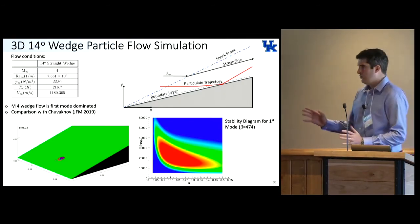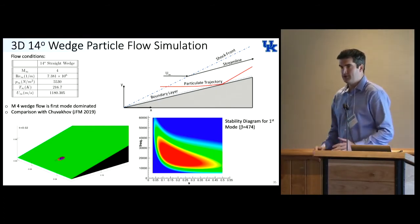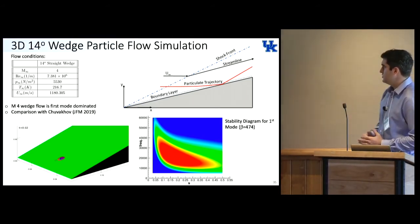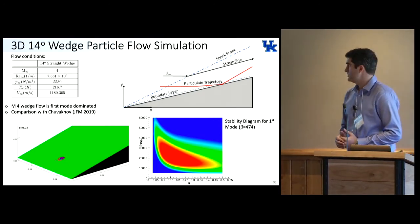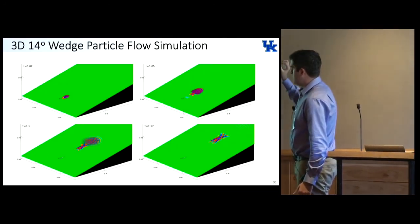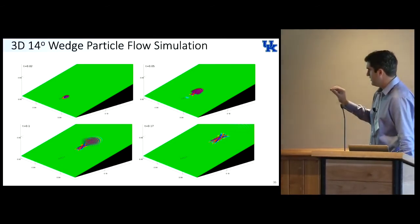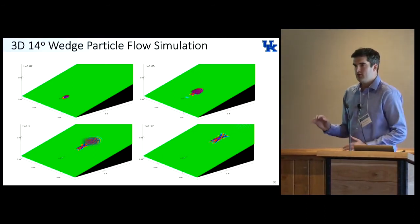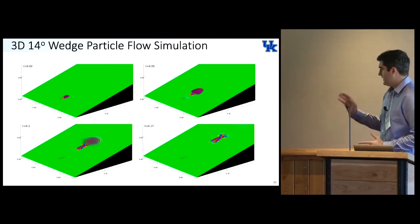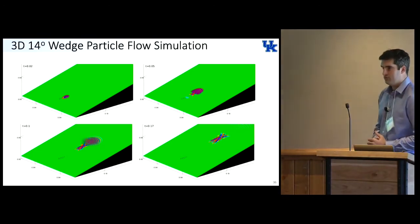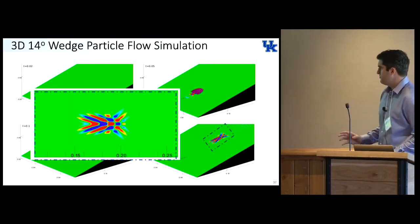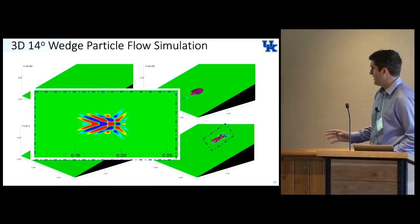Then we move on to a wedge case, more indicative of a front of a hypersonic vehicle. The reason we picked this case is we could use it as a comparison with Chukakov. They also did particle-induced transition simulations. You can see a couple of spheres indicating the particle trajectory. In this simulation, to compare with them, we didn't allow the particle to rebound when it hit the surface. In this particular case, this is a Mach 4, and it introduces a first mode instability. We can see more clearly that first mode wave packet propagating downstream.